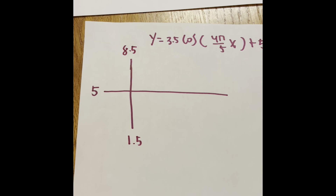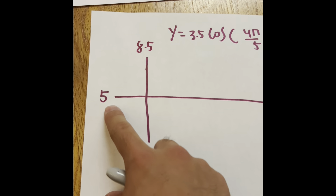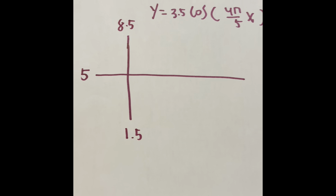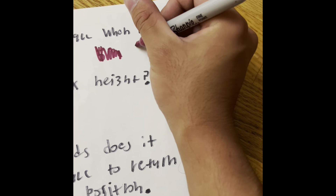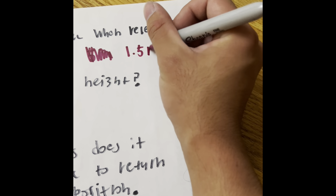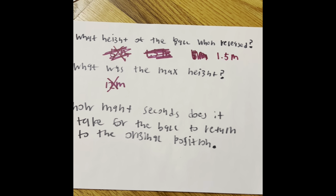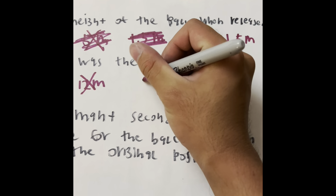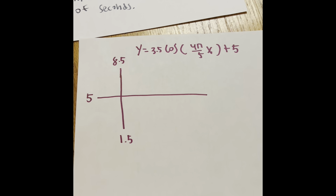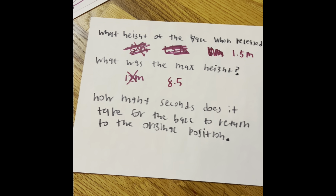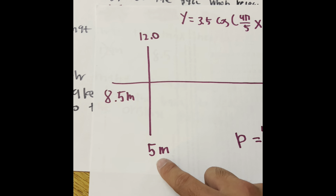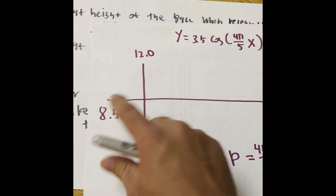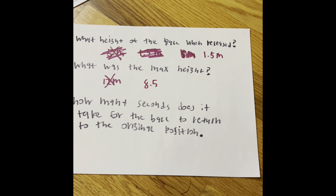So we know the minimum, we know the midline, and we know the maximum height. Now let's answer some questions. What height was the ball when it was released? It's not 5 meters, because you have to charge it with energy so the spring can stretch — it's 1.5 meters. What was the maximum height? I originally said 12 meters, but it's actually 8.5, because that is the maximum the graph has. The 5 feet is actually the midline, not the minimum, so the earlier graph was incorrect.